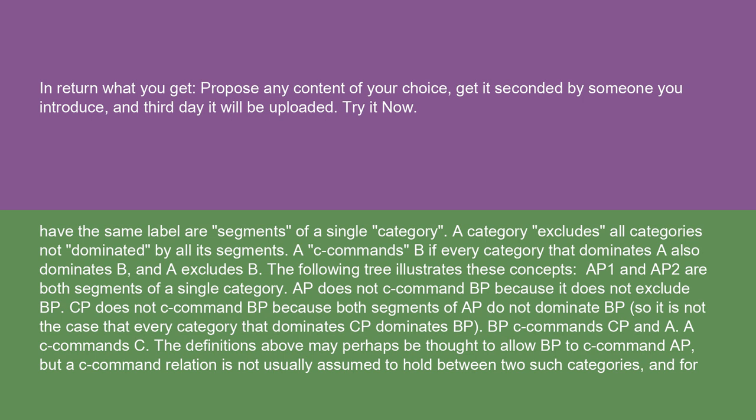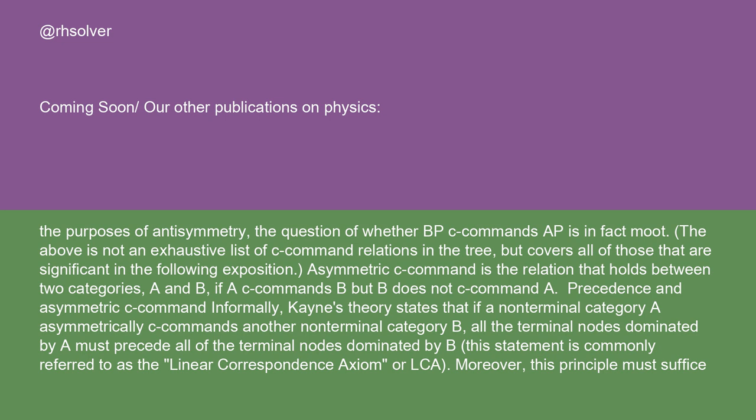The following tree illustrates these concepts. AP1 and AP2 are both segments of a single category. AP does not C-command BP because it does not exclude BP. CP does not C-command BP because both segments of AP do not dominate BP, so it is not the case that every category that dominates CP dominates BP. BP C-commands CP and A. A C-commands C. The definitions above may perhaps be thought to allow BP to C-command AP, but for the purposes of antisymmetry, the question of whether BP C-commands AP is in fact moot.